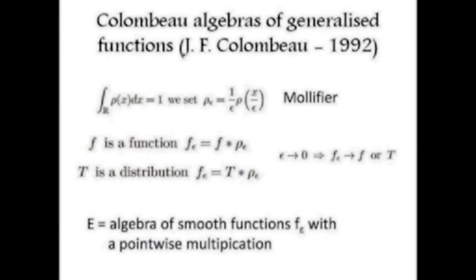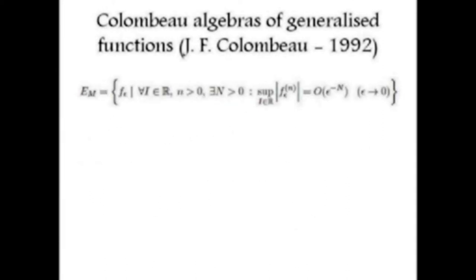The algebra E consists of functions f_epsilon in two variables x and epsilon, representing the objects we started from. In this algebra, however, we do not want elements where, as epsilon goes to zero, a function f_epsilon may grow too fast. We know that delta will grow like 1/epsilon and delta-prime like 1/epsilon-squared, so we want to remove all functions that grow more than polynomially as epsilon goes to zero, keeping what we call moderate functions.